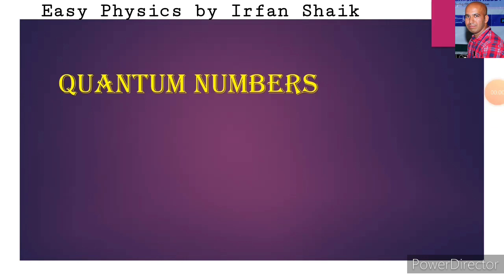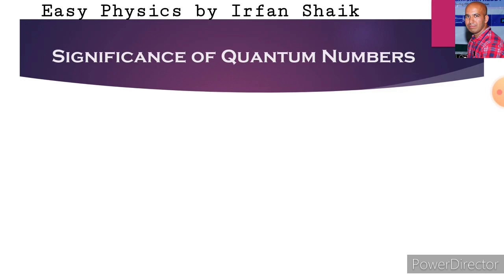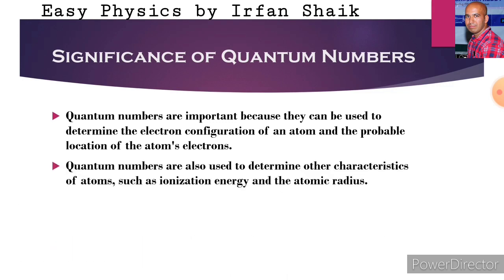This is one of the most important topics in the chapter of structure of atom. Let us first learn the significance of quantum numbers. The quantum numbers are important because they can be used to determine the electronic configuration of an atom and the probable location of the atom's electrons. Quantum numbers are also used to determine other characteristics of atoms such as ionization energy and the atomic radius.